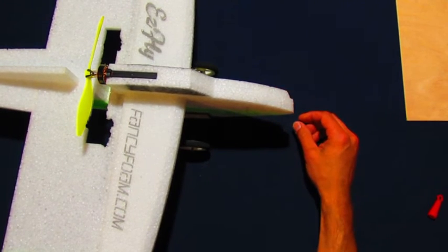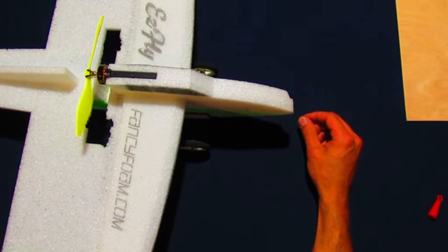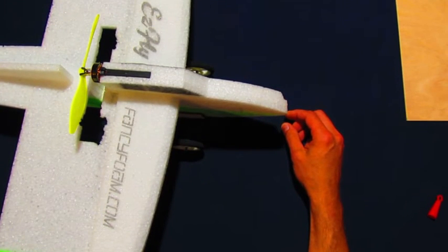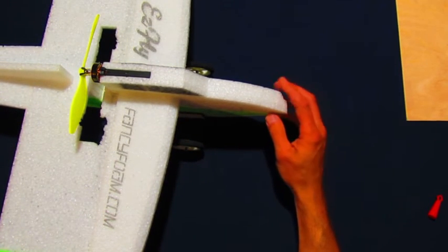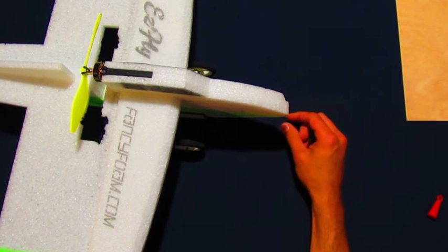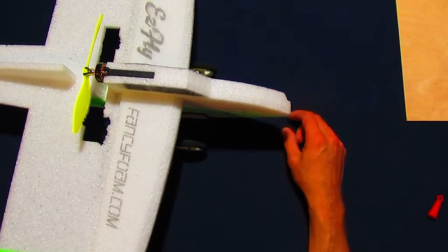With landing, we do our normal landing approach. Come in, reduce the throttle to quarter throttle, maybe a little bit less so that it's descending nicely and under control. As you get close to the ground, just a little bit of up elevator to slow the descent and land right down on the wheels.